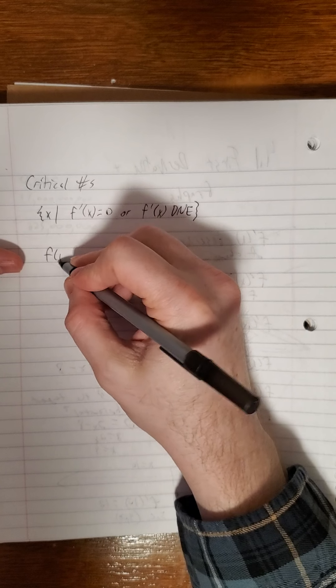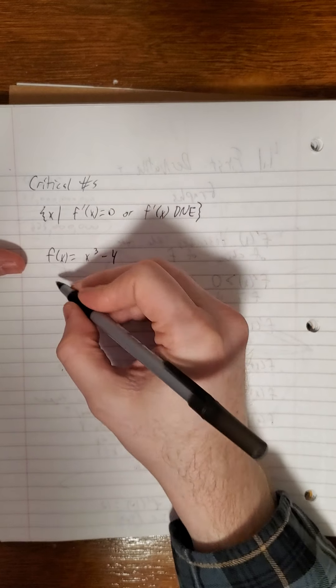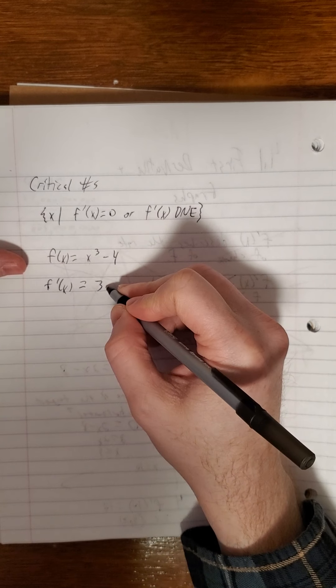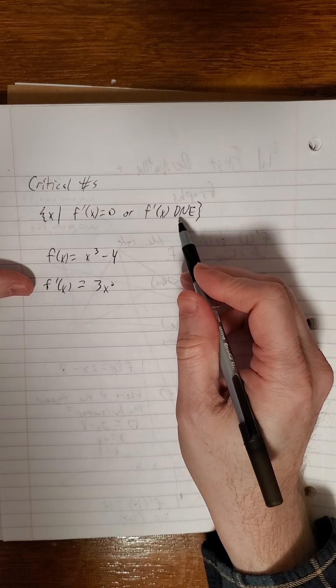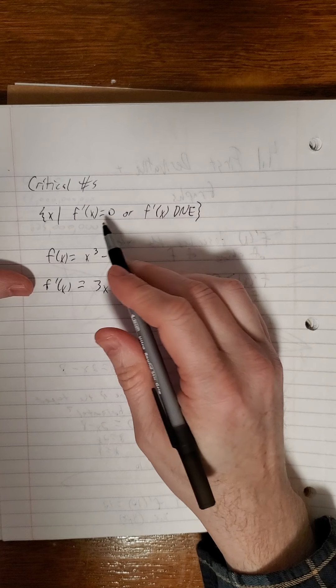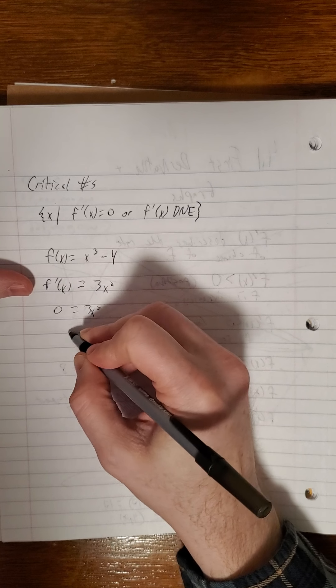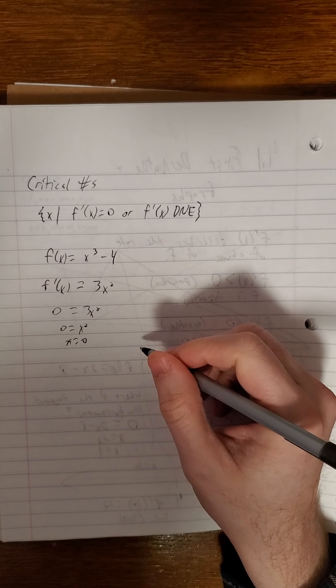So either one of those could be a change in behavior in the graph. So for example, we'll look at f of x is x cubed minus 4, f prime of x. Hopefully you see that that would be 3x squared. So since f prime is a polynomial, it would exist everywhere. So we don't have to worry about the second condition. We just figure out where it's worth 0. And that's at 0.